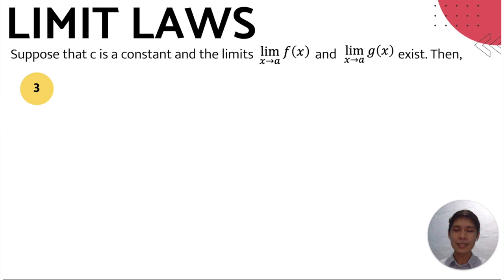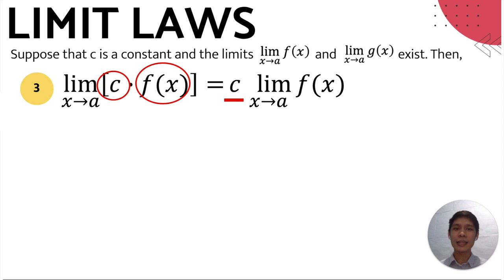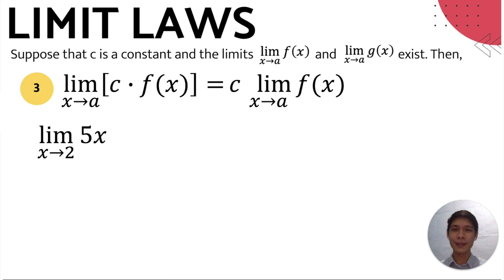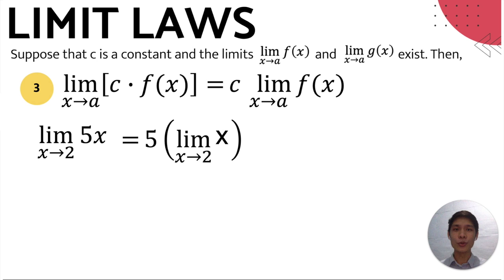The third limit law is called the constant multiple law. It states that the limit of a constant times a function is equal to the constant times the limit of that given function. Example: let's find the limit of 5x as x approaches 2. We can move the constant 5 before we write the limit. Evaluating the limit of x as x approaches 2 using special limits, we get 2. Multiplying 2 by 5, we get 10. Therefore, the limit of 5x as x approaches 2 is equal to 10.